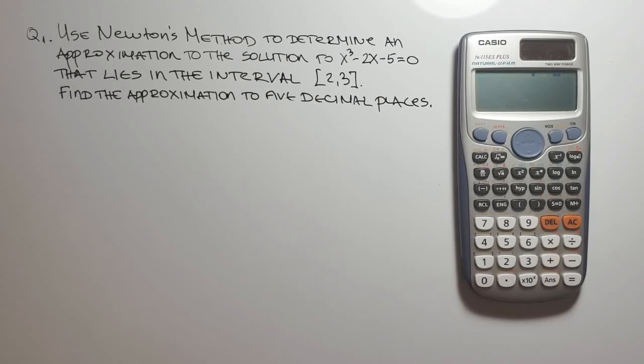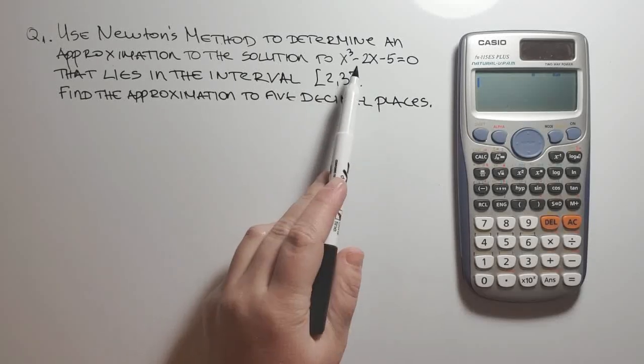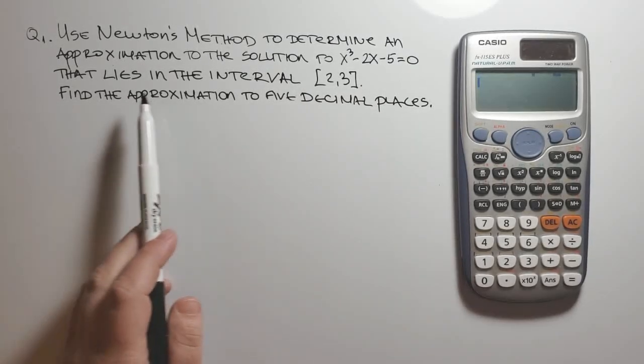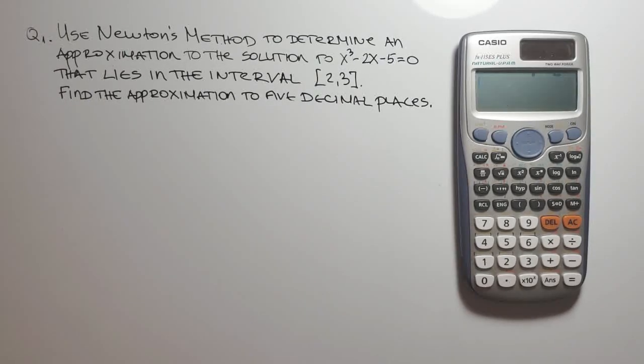Here is the example. Use Newton's method to determine an approximation to the solution to x cubed minus 2x minus 5 equal to 0 that lies in the interval 2 to 3. Find the approximation to five decimal places.